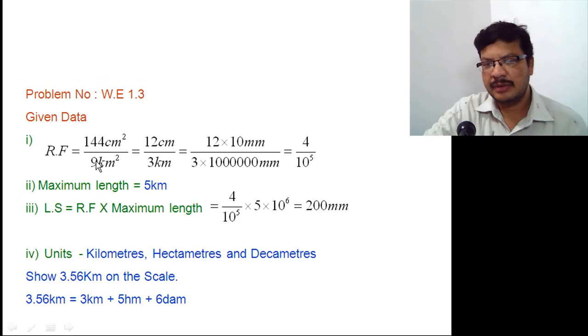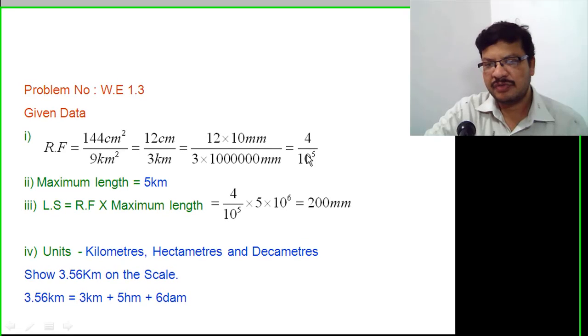So to find the RF value, convert these areas into lengths. Take the square root for the numerator and denominator, then 12 cm and 3 km are the lengths. Now convert the km into mm, cm into mm. After simplification, RF value is 4 by 10 to the power of 5.